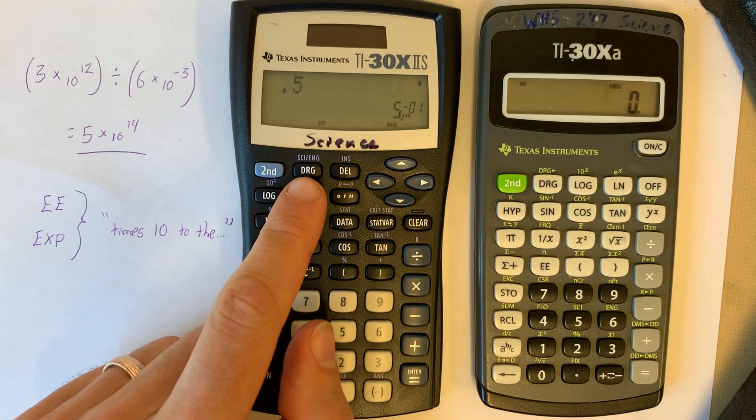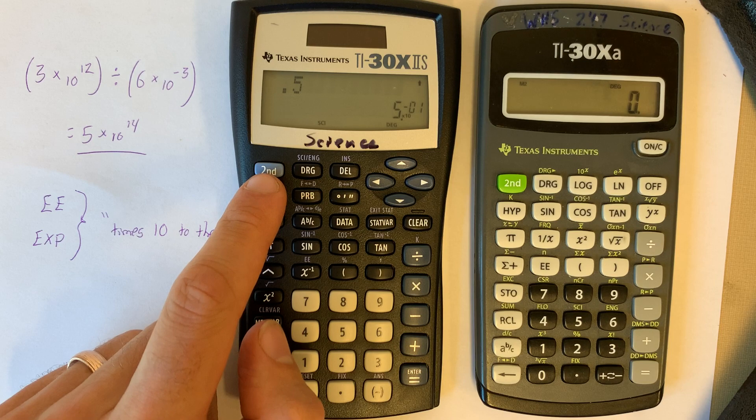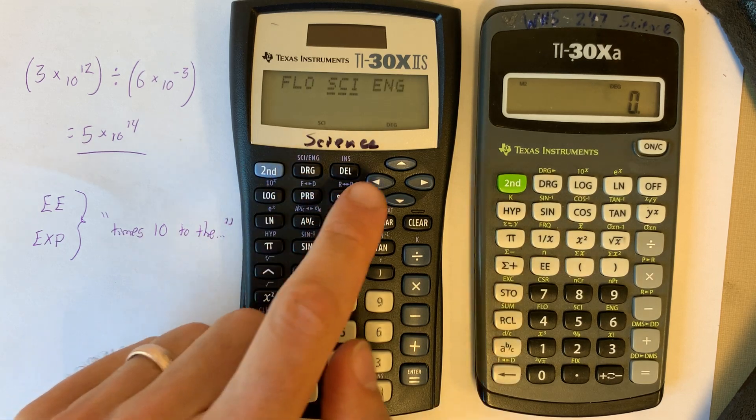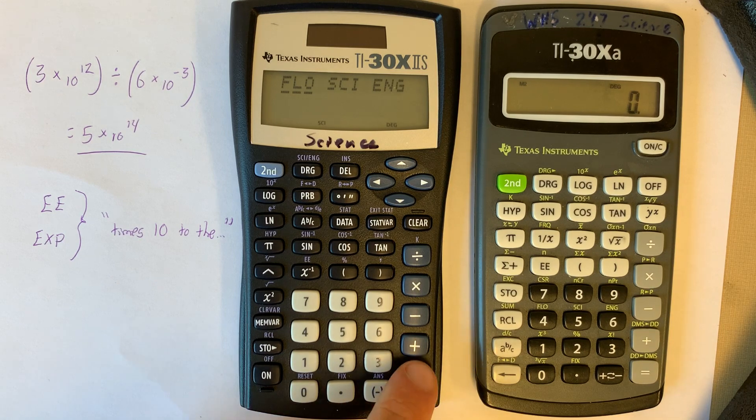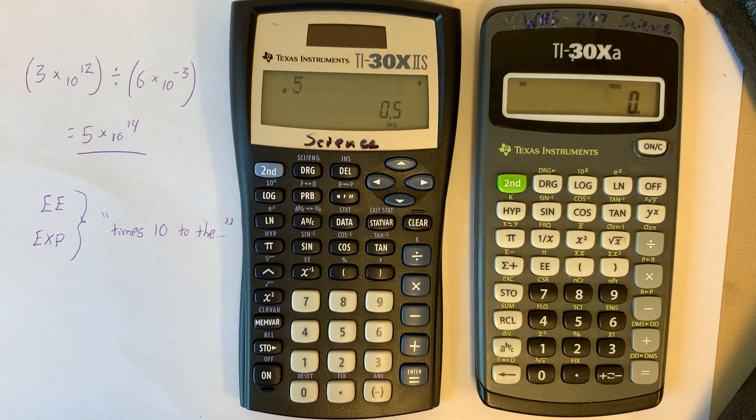If I want to undo this, see how it says SCI over here, go back to regular, I press 2nd SCI again, and go back to float, which just means regular notation. And there is my 0.5, just like normal.